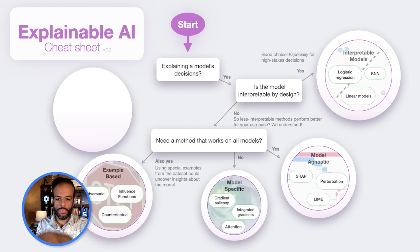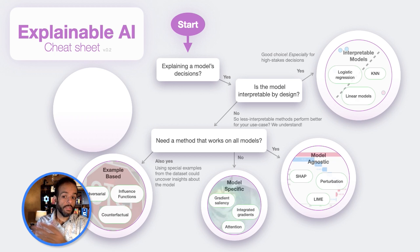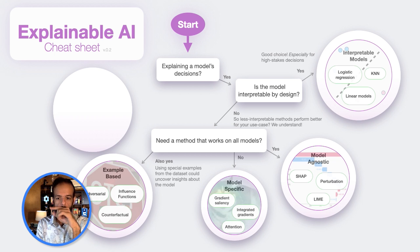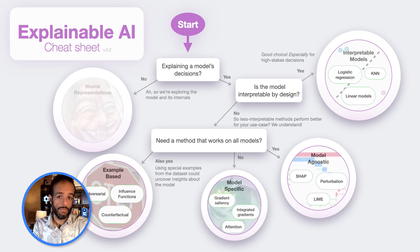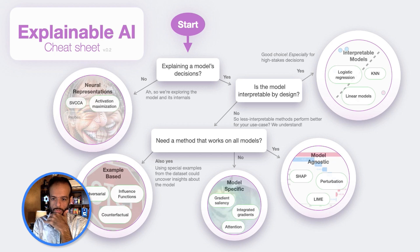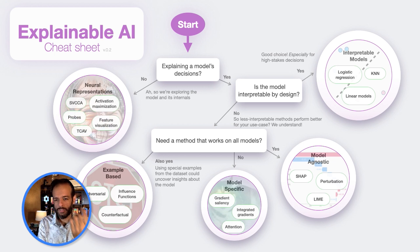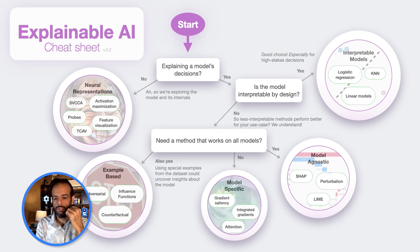That's our fourth category of explainable AI methods. Now let's circle back and look at methods that explain model internals — things like feature visualization or activation maximization.